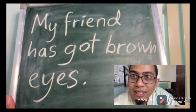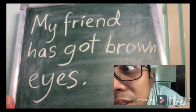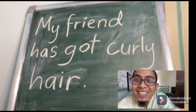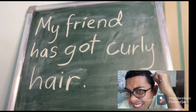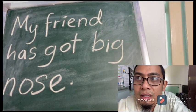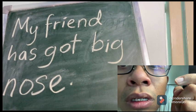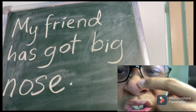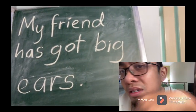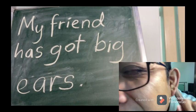You can also say: my friend has got brown eyes. You can also say: my friend has got curly hair. You can also say: my friend has got a big nose. My friend has got big ears - big ears like an elephant!